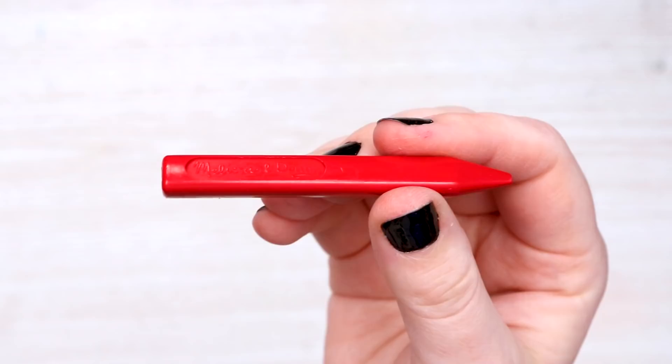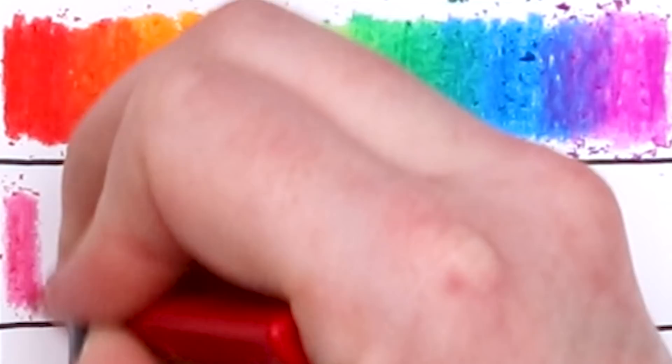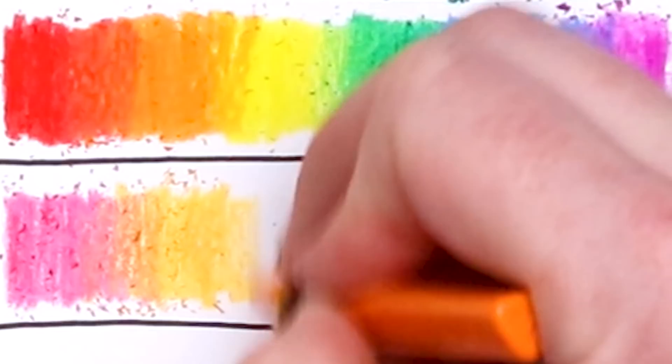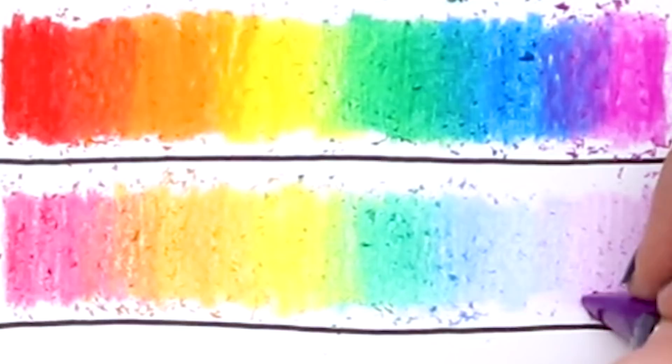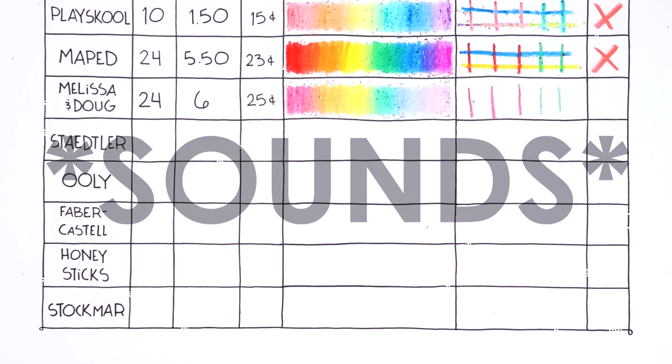Next up we have the brand Melissa & Doug which I got at Whole Foods. I was not expecting to find crayons at Whole Foods. Very fancy. This pack has 24 colors. It costs $6 which brings them to 25 cents per crayon. Oh my goodness, why is this red pink? Why is this red pink? I don't like it. They feel very solid, I do appreciate that but the color is not good. I don't know, for expensive fancy crayons this purple's a ghost. Oh no, you can barely see anything. I do like the sounds they make. Listen. They sound like little pieces of plastic.